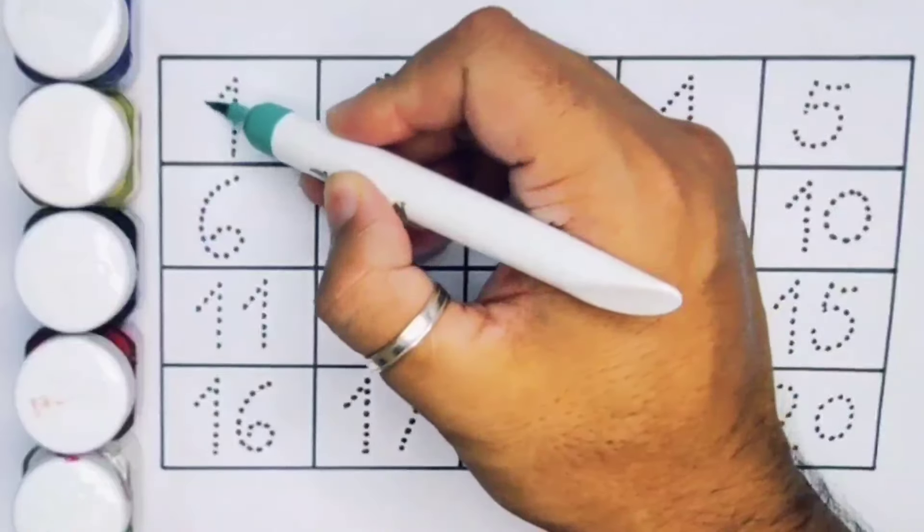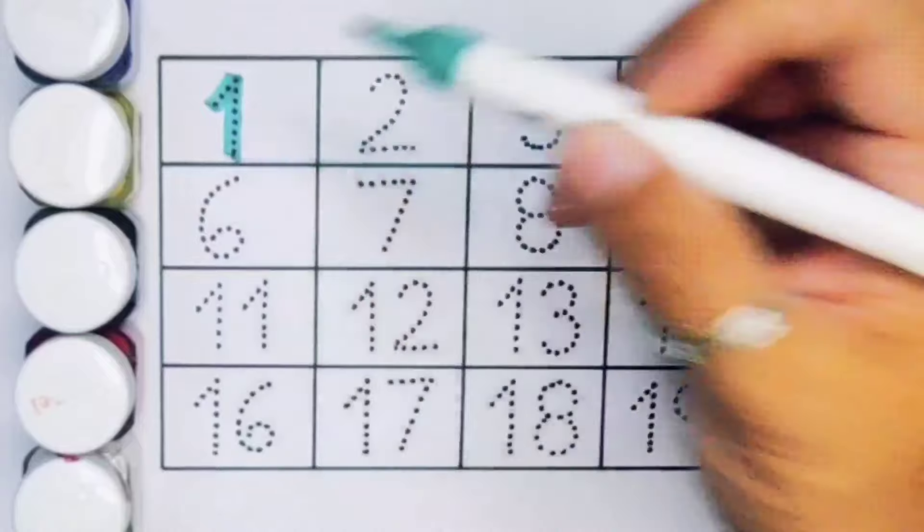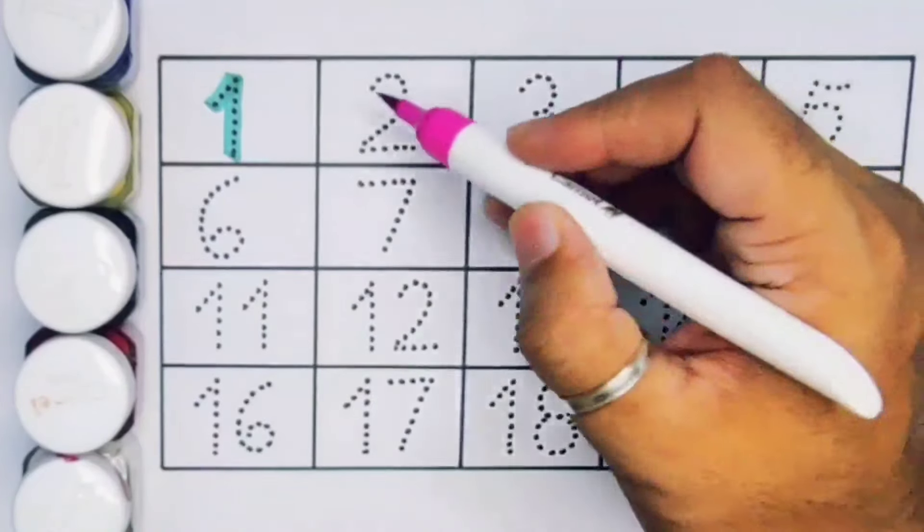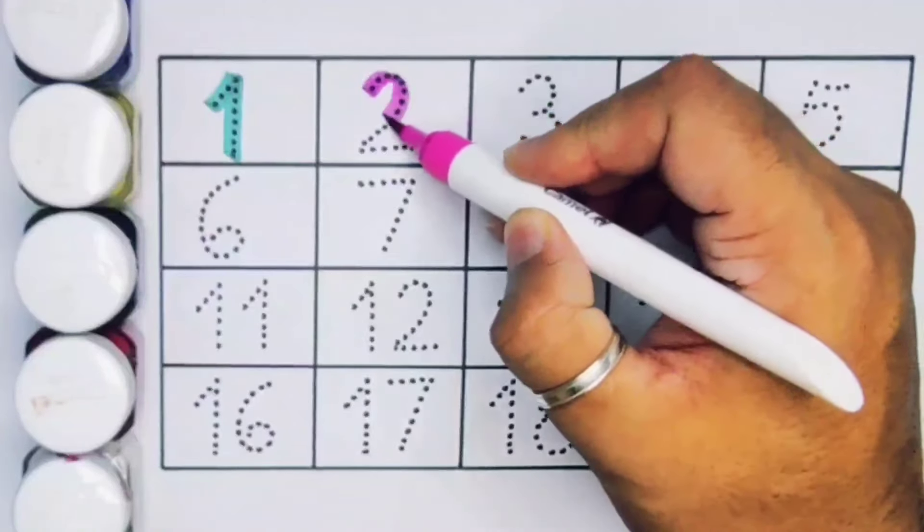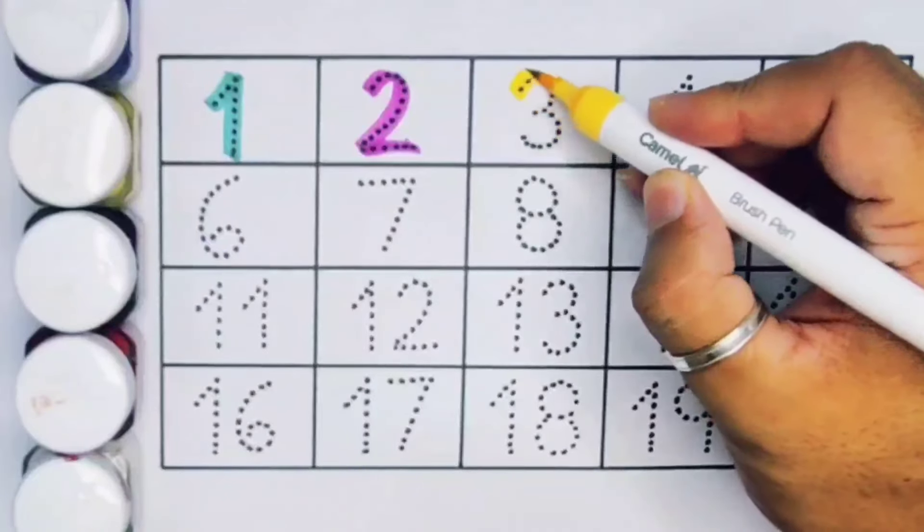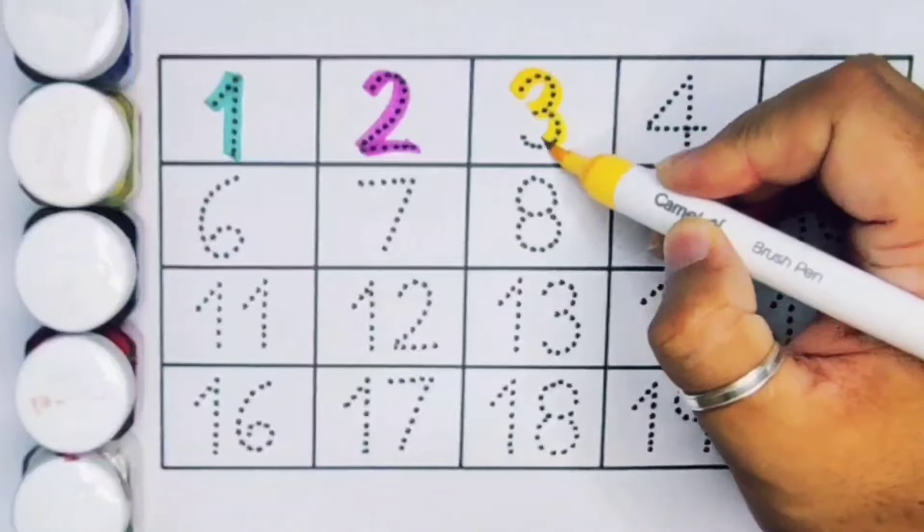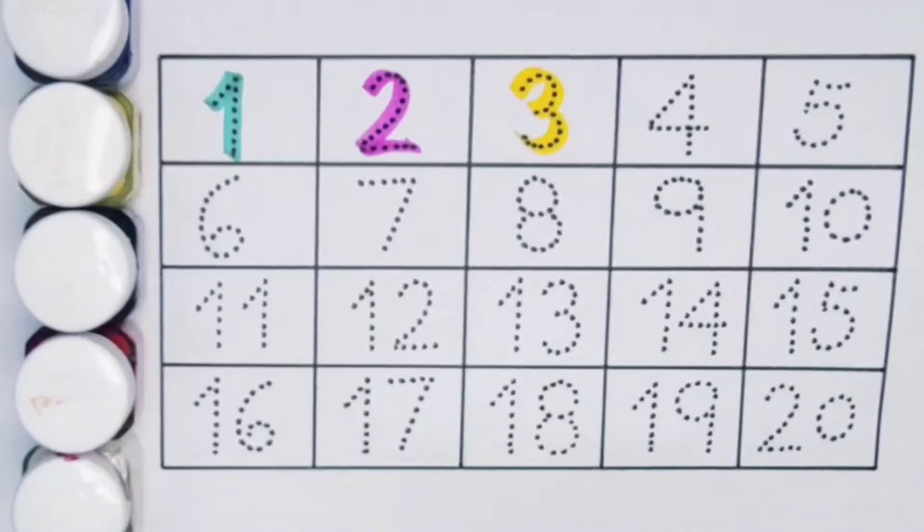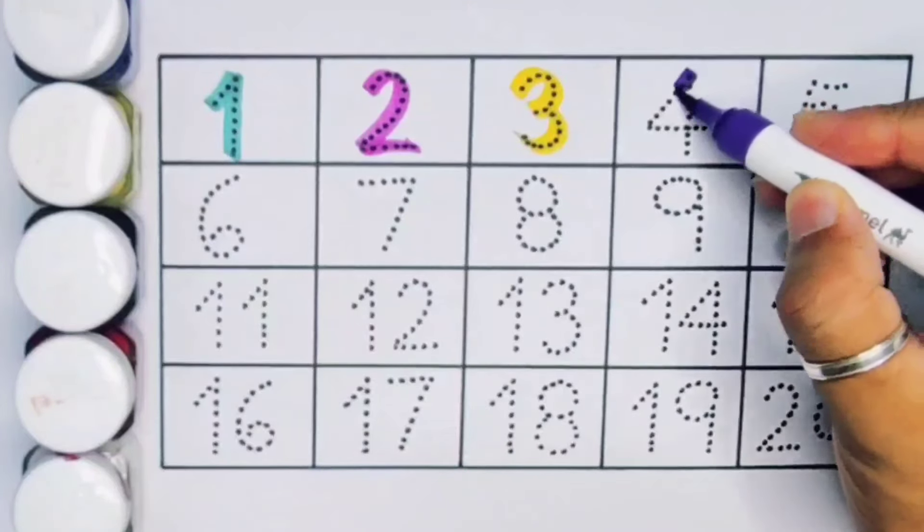First 1, number 1. Next kids 2, number 2. Next kids 3, number 3. Next kids 4, number 4.